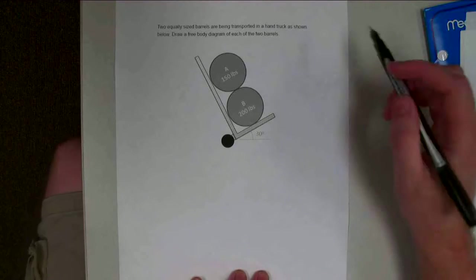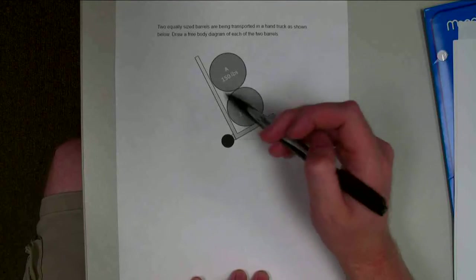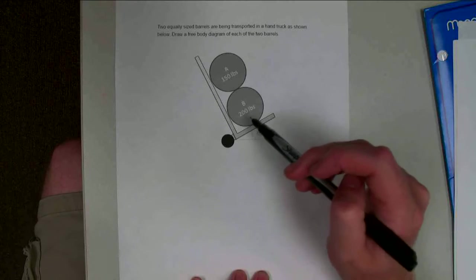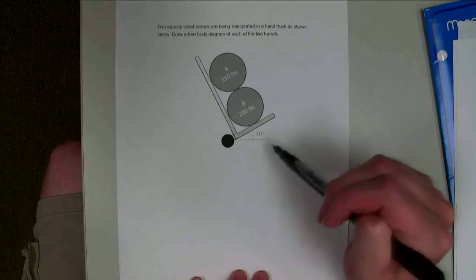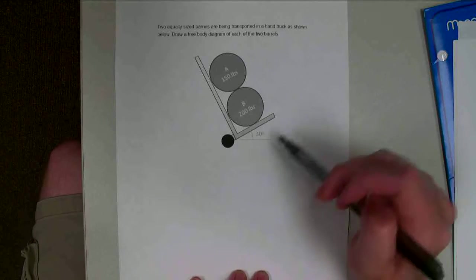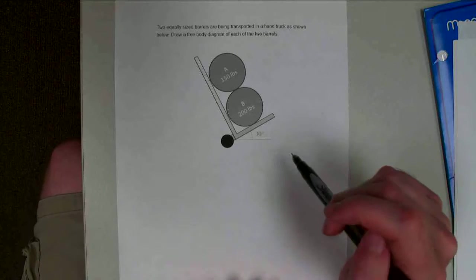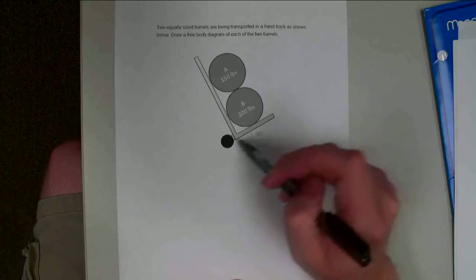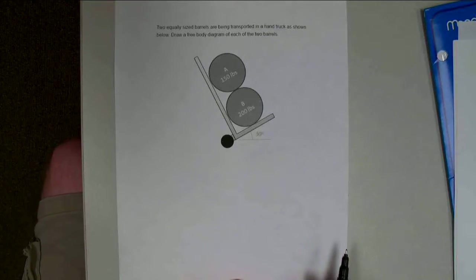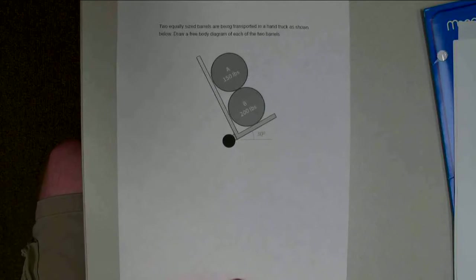Hello, for this video, we've got two equally sized barrels, barrel A and barrel B, and these barrels are being transported on a hand truck, so this is just a little cart. It's tilted back at a 30 degree angle, we're assuming this is a 90 degree angle right here, and so we want to draw a free body diagram of each of the two barrels.